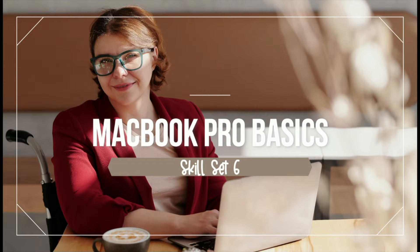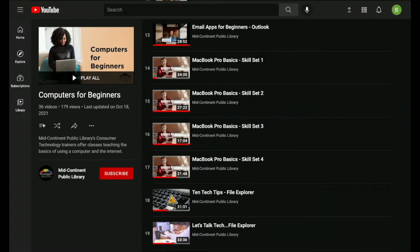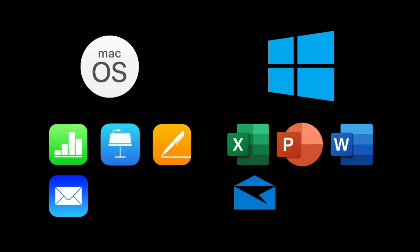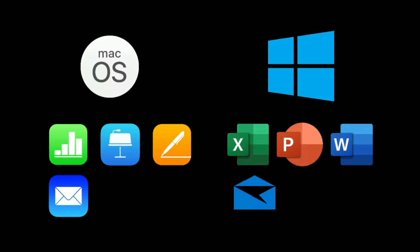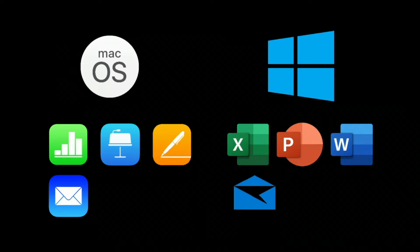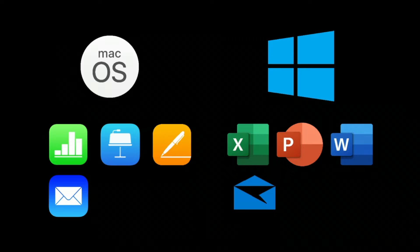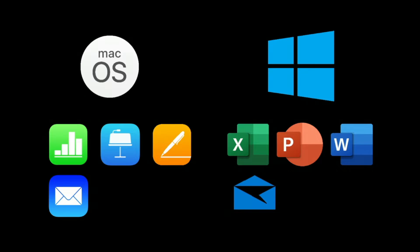Today's video is a part of the MacBook Pro Basics Skillset Series, where we explore the Mac operating system and apps that you're likely to use. Last time we kicked it off with parts 1-4, exploring the hardware, basic navigation, the Finder app, Microsoft Office, Safari, and more. The next four parts of the skillset series will focus on apps that have equivalents in Windows such as Numbers, Keynote, and Pages. Then we will end the skillset with skillset 8 about the mail app.